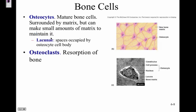The osteocyte is the mature bone cell, located in the lacunae — little spaces occupied by the osteocyte. They produce just a small amount of matrix to maintain it. The matrix consists of collagen and hydroxyapatite.